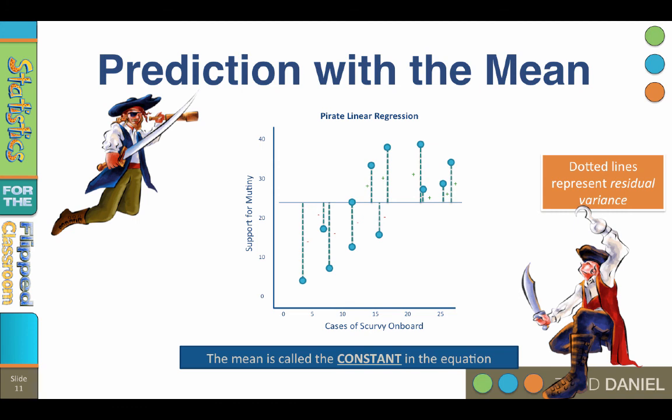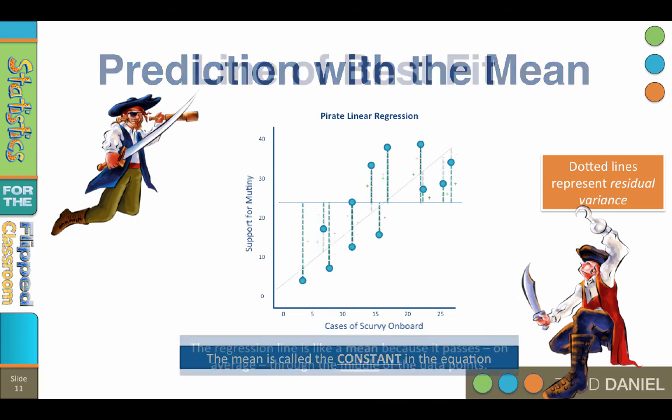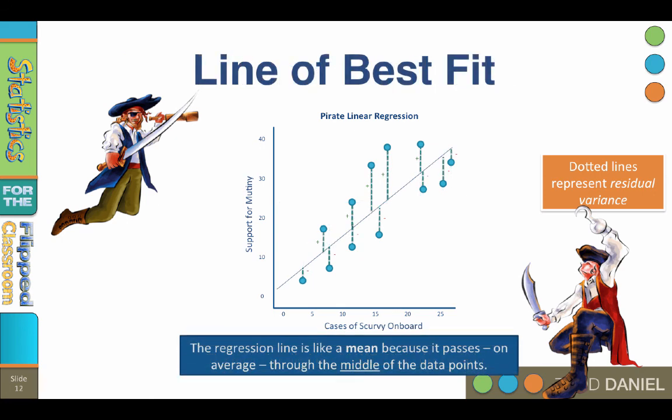So here we have a straight line with a certain amount of residual error. Linear regression allows us to create another straight line that has less error, and it looks like this. This is the line of best fit, aka the regression line. The line of best fit is a straight line on the scatter plot that passes, on average, through the center of all the y scores at each x. Like a mean, it passes through the middle of the data. But this line of best fit has much less residual error than predicting with the mean.